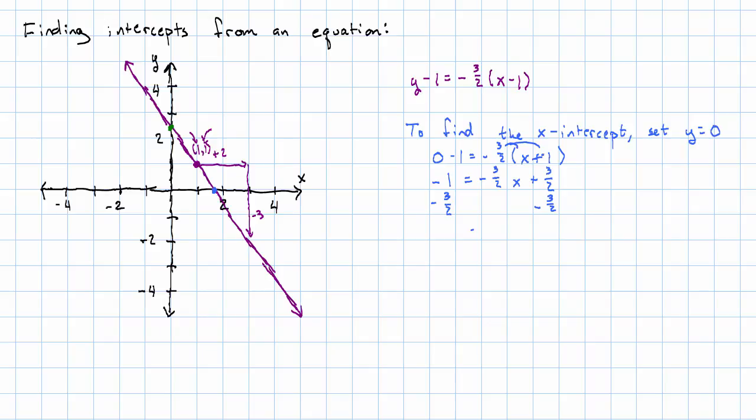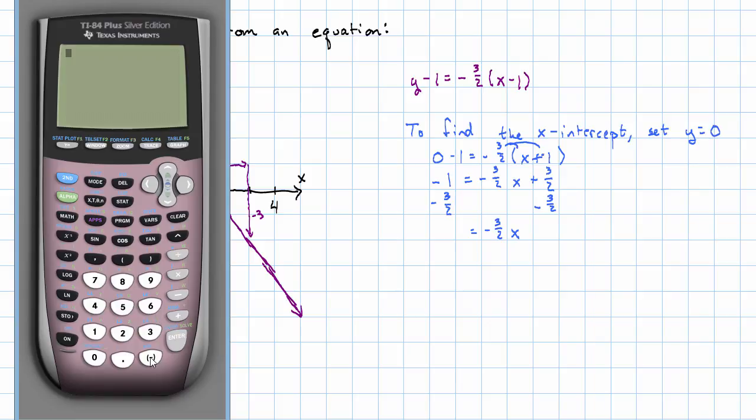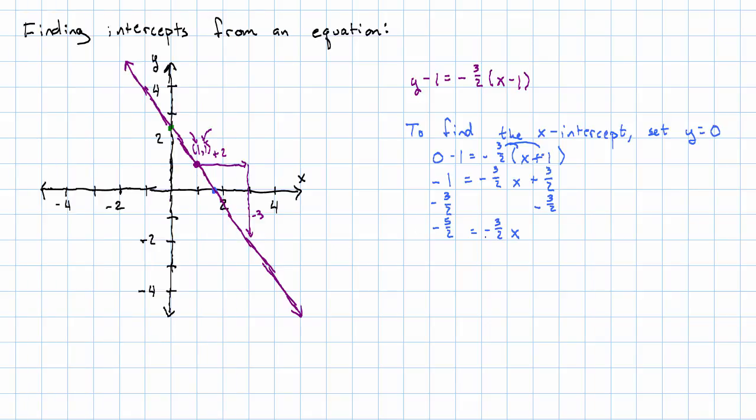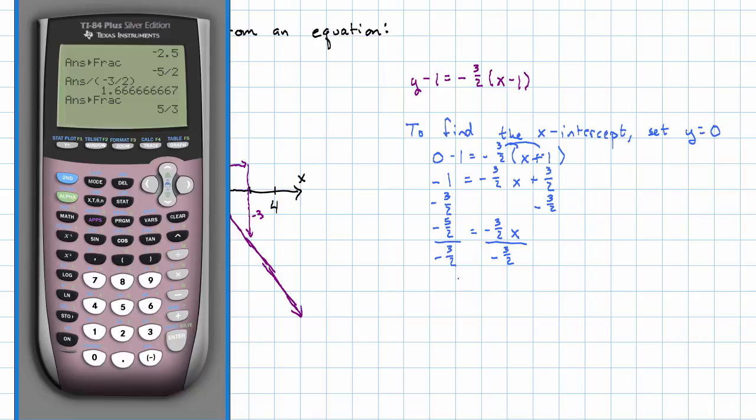I subtract 3 halves on both sides and get negative 3 halves x equals, using my calculator, negative 1 minus 3 halves, that's negative 5 halves. And then dividing both sides by negative 3 halves, we get 5 thirds. So our x-intercept is at x is 5 thirds, y is 0.